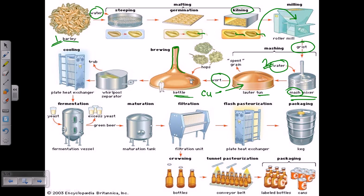Once the wort is in the kettle, they add hops — the third most important ingredient. Hops are put into the wort, and at this point the actual brewing process begins. You can see how large these kettles are relative to a person. The kettle is then heated for a while. As a result of this heating, all the ingredients from the malt come out into the wort — the flavor from the malt and the flavor from the hops are both released and mixed with the water.